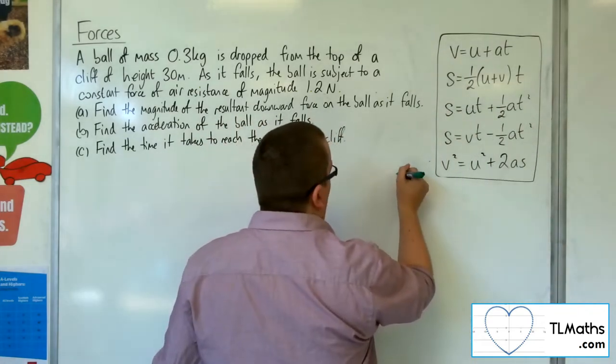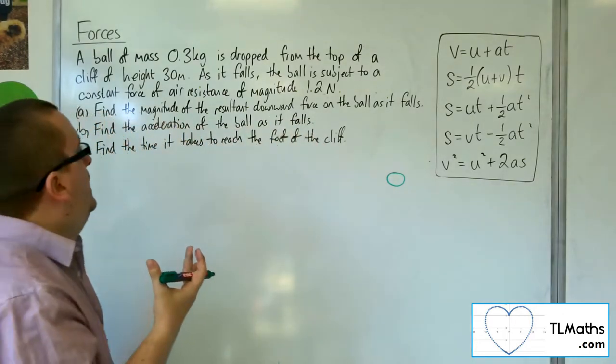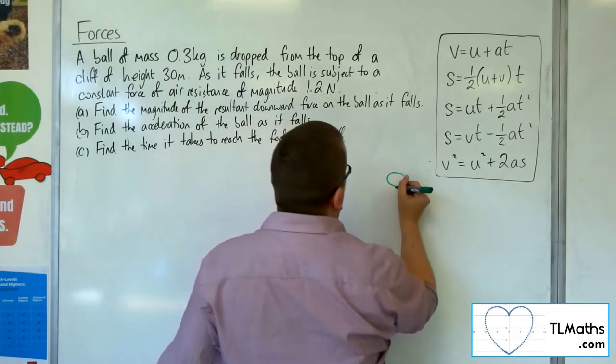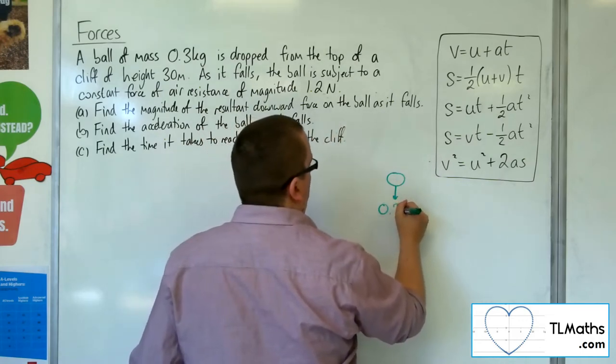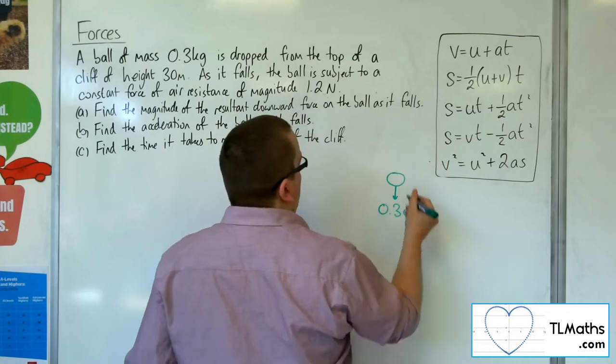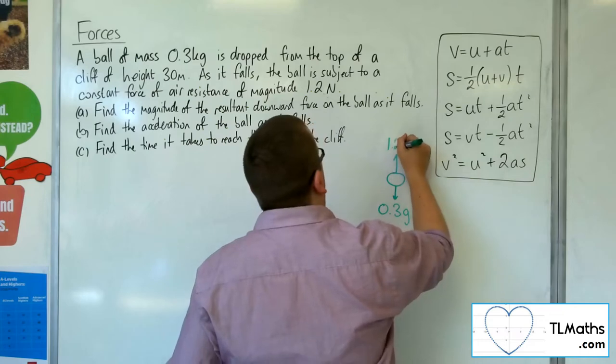So here is the ball. Now the ball has this mass of 0.3 kilos, so it has weight working directly downwards at 0.3g. It's got this air resistance working against it of 1.2 newtons.